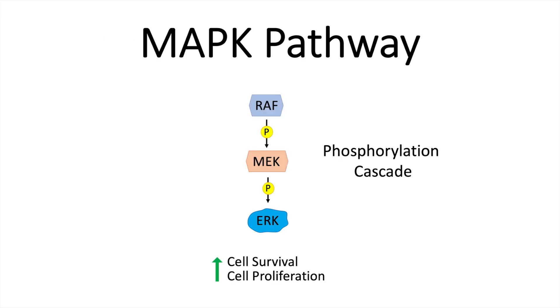So long story short, the MAP kinase pathway is a phosphorylation cascade which in the end leads to the activation of transcription factors to promote cell proliferation and cell survival. That was the overview about the MAP kinase pathway. I hope it was helpful for you. Thank you very much for watching.